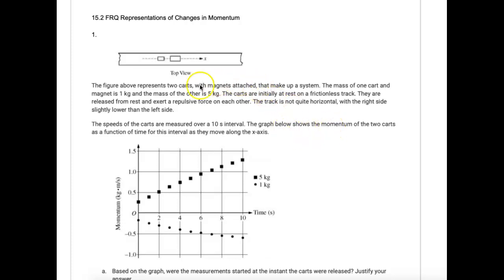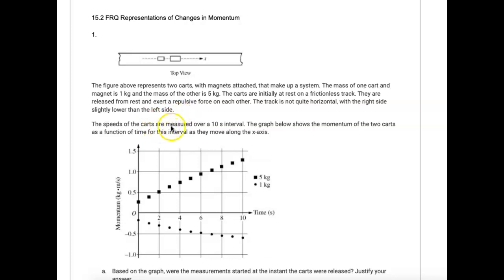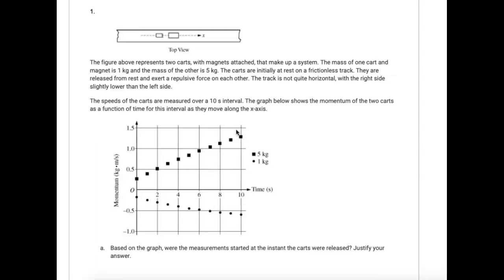In this one, we've got a figure that represents two carts making up a system. The mass of one cart and magnet is one kilogram, and the mass of the other is five kilograms. The carts are initially at rest on a frictionless track — that's important. They are released from rest and exert a repulsive force on each other, so they take off in opposite directions. The track is not quite horizontal, with the right side slightly lower than the left. The speeds of the carts are measured over a 10-second interval, and the graph shows the momentum of the two carts as a function of time as they move along the x-axis.